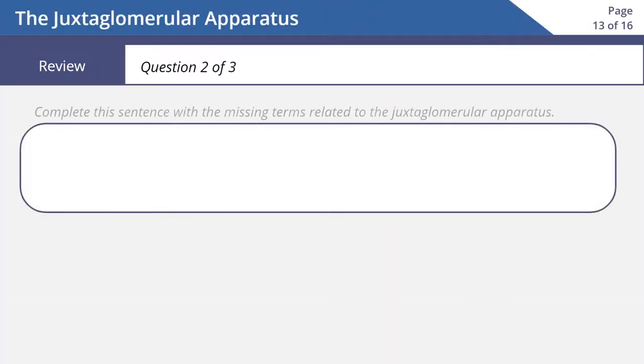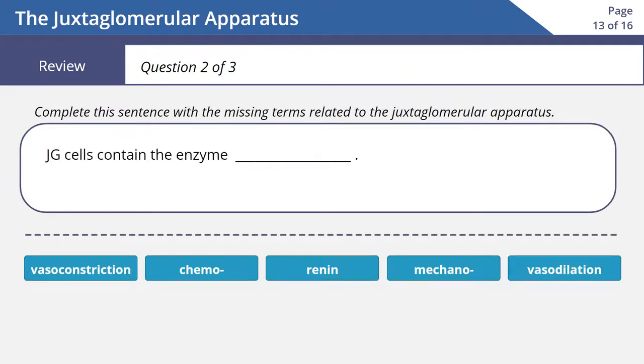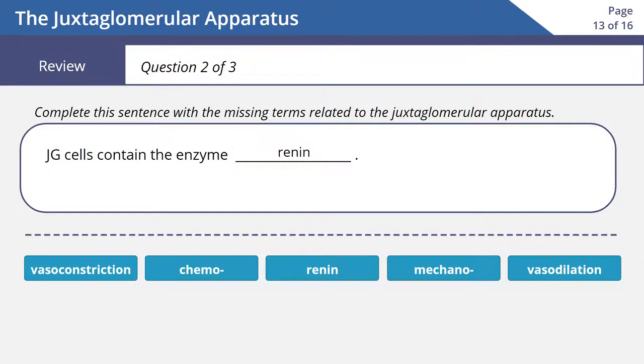Let's try another one: JG cells contain the enzyme blank. Answer: JG cells contain the enzyme renin.